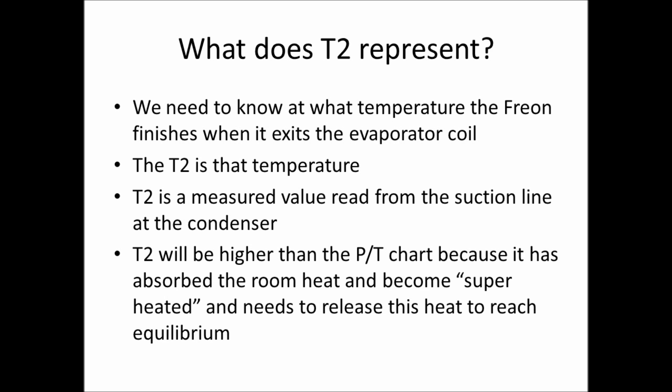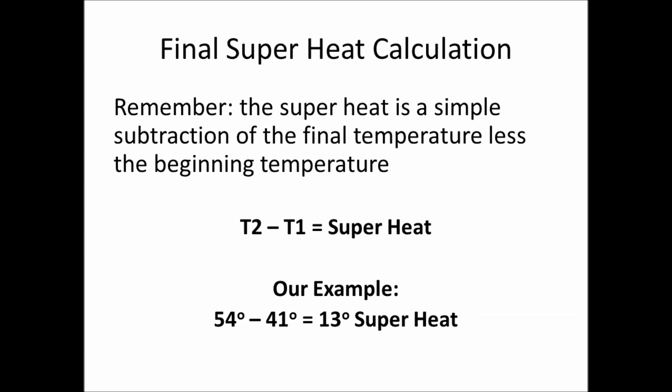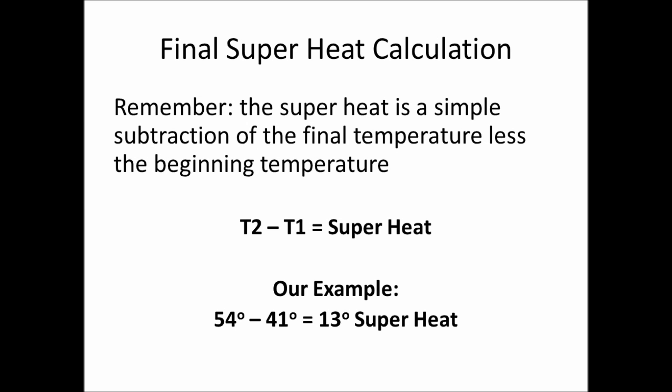T2 is a measured value from the suction line. It can be higher than what's shown on the pressure-temperature chart because the freon has absorbed the room heat, becomes superheated, and needs to release this heat. So the final superheat calculation is simple subtraction: in our example, 54 degrees minus 41 degrees equals 13 degrees of superheat.